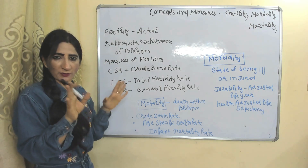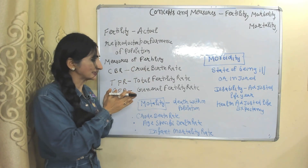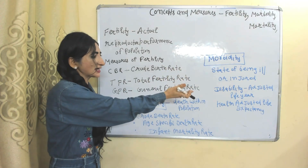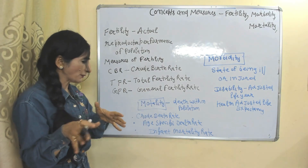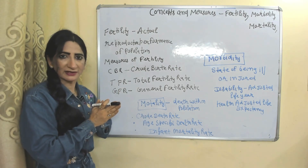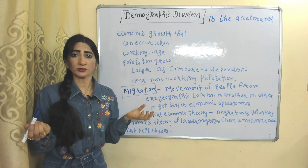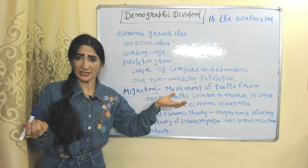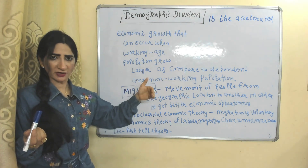Concepts and measures of fertility, morbidity, and mortality: fertility means the actual reproductive performance of a population. Measures of fertility include crude birth rate, total fertility rate, and general fertility rate. Morbidity is the state of being ill or injured; measures include disability-adjusted life years (DALY) and health-adjusted life expectancy. Mortality refers to death within a population; measures include crude death rate, age-specific death rate, and infant mortality rate. Demographic dividend is the accelerated economic growth that occurs when the working-age group of the population grows faster compared to the non-working age group and dependent population.